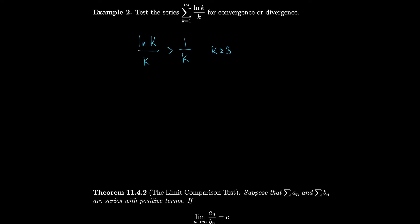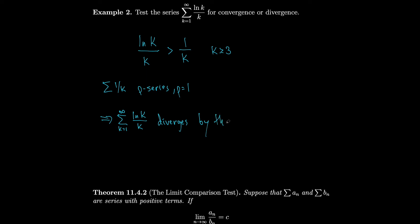This series 1/k is just the harmonic series — in other words, it's a p-series with p = 1. We know that the series diverges. So that means our series from k = 1 to infinity of ln(k)/k must also diverge by the comparison test, because it's even bigger than a divergent series.